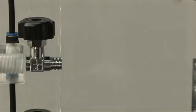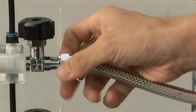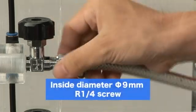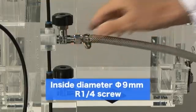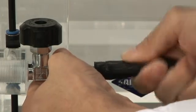Connect each piping to the vacuum valve. According to the inlet shape, choose a resisting pressure hose which has an inside diameter of 9 millimeters and a quarter inch radius screw for the vacuum pump.